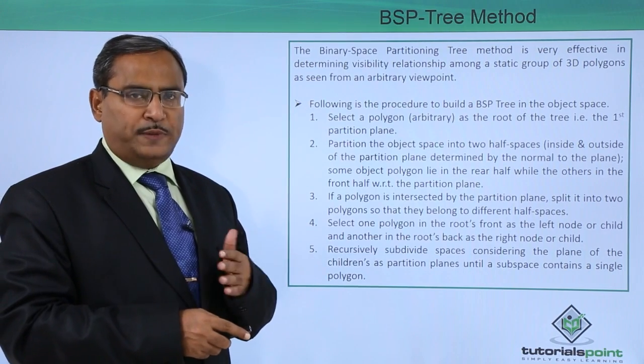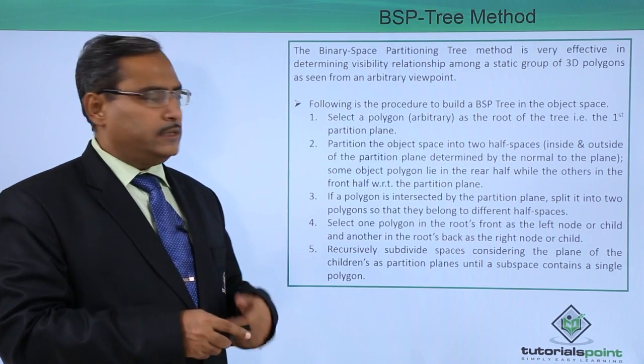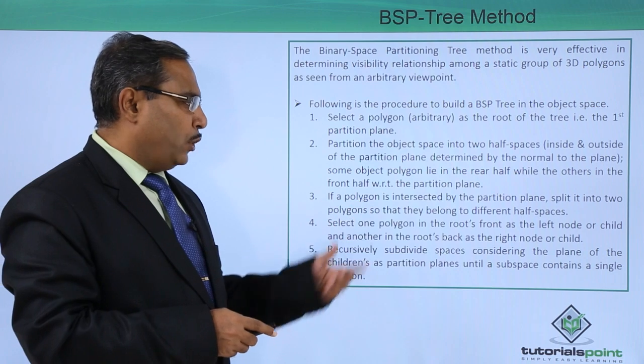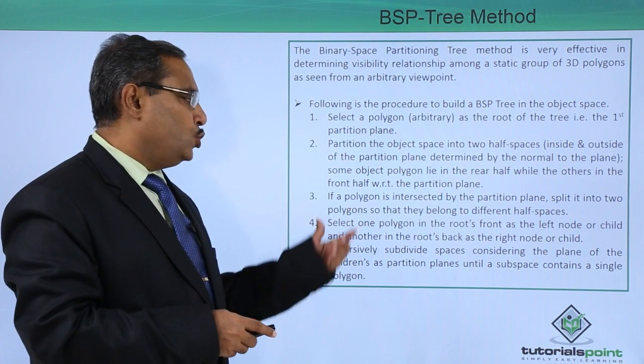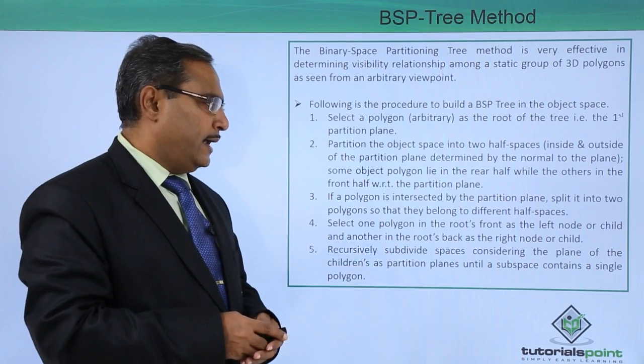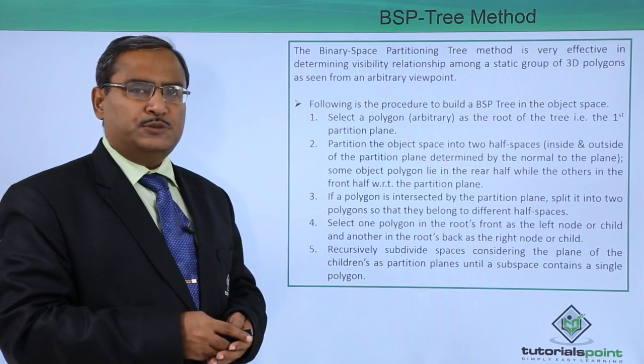Here we will be having two spaces: one is the front half, another is the rear half. If a polygon is intersected by the partition plane, split it into two polygons so that they can belong to different half spaces.